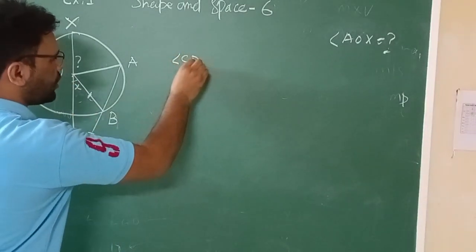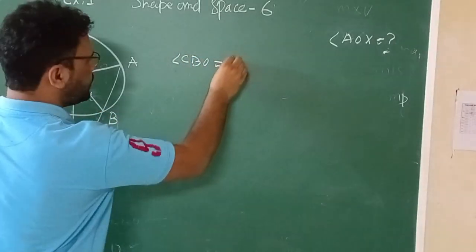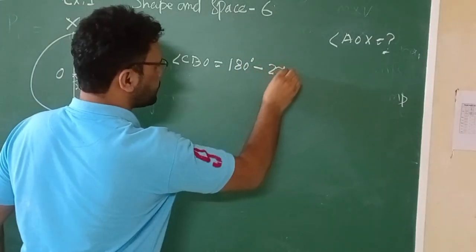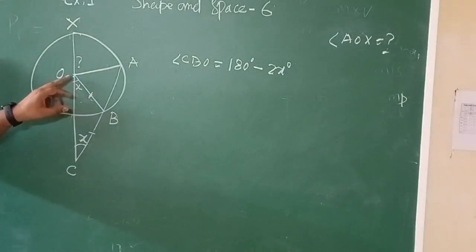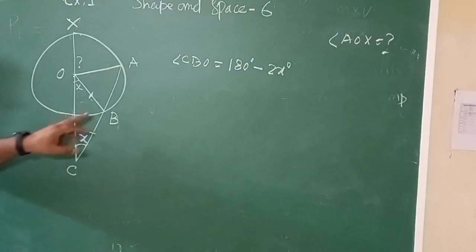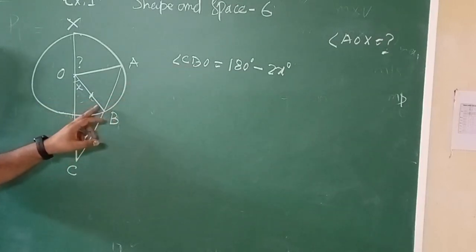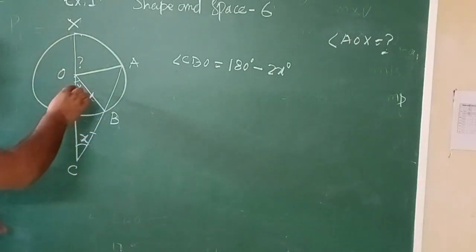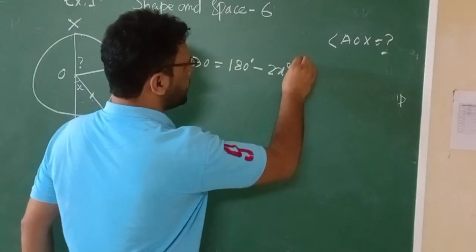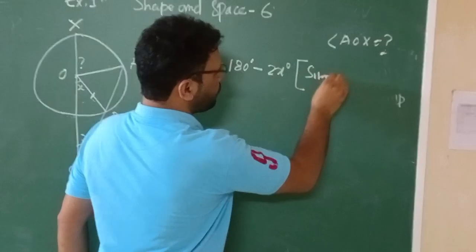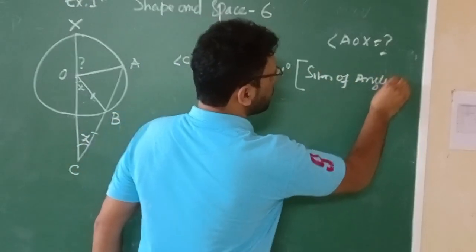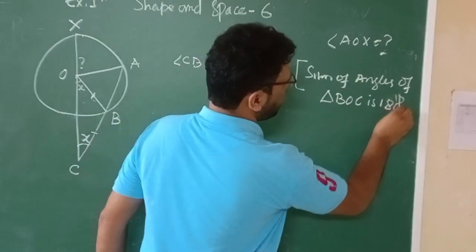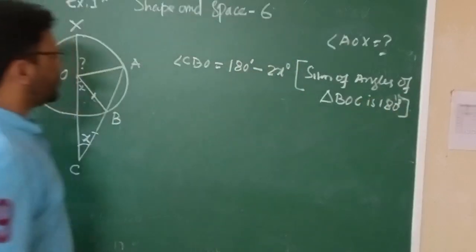Now we find angle CBO. I write: angle CBO equals 180 degrees minus the sum of the two angles, which is 2x. From triangle BOC, angle CBO equals 180 minus 2x. The reason is that the sum of angles of triangle BOC is 180 degrees.